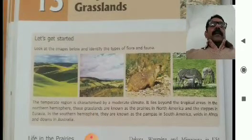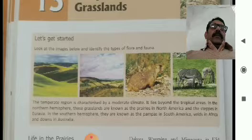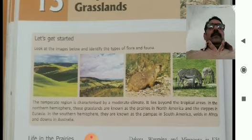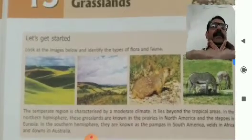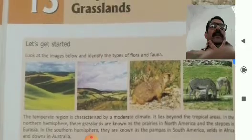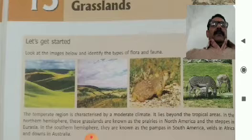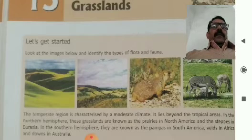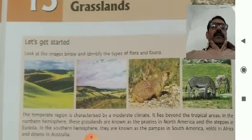What is Temperate Grassland? This chapter will help us a great deal to understand that. Look at the images below and identify the types of flora and fauna. What types of flora and fauna are visible in the picture? Try to understand and identify — some flora and fauna are shown there.